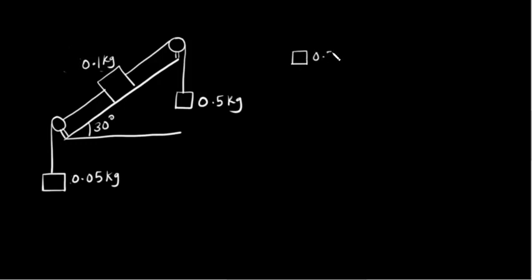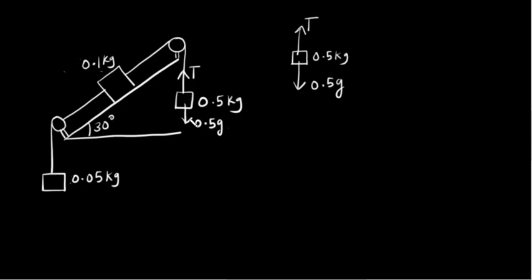Here there is a 0.5 kg mass. Let's say the tension is T upwards, and downwards the gravitational force is 0.5g. This mass will be going downwards, so with tension T, we have 0.5g minus T is equal to 0.5 times a. This is the acceleration.